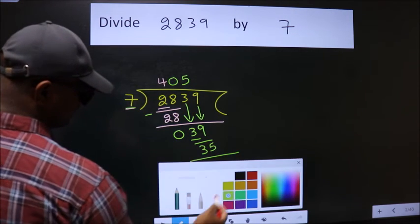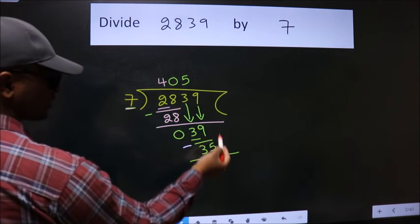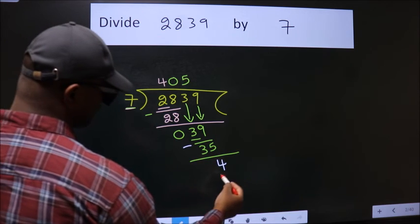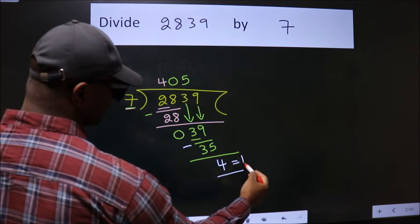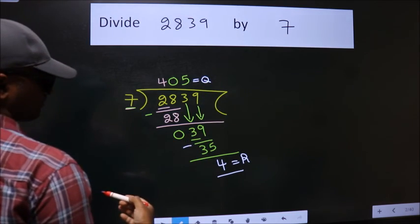Now we subtract, we get four. No more numbers to bring down, so we stop here. This is our remainder, this is our quotient.